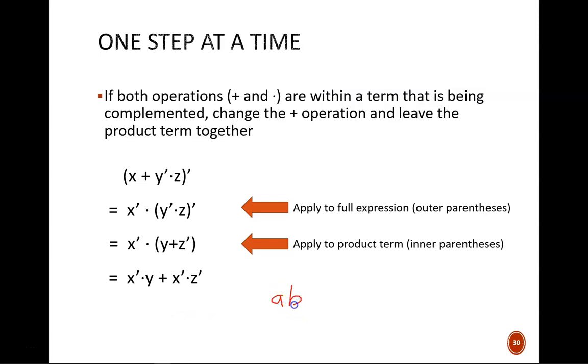I do not recommend doing this when working with DeMorgan's Theorems. By explicitly writing the middle dot, it makes it easier to see that there is an operator there that needs to be switched to a plus sign.